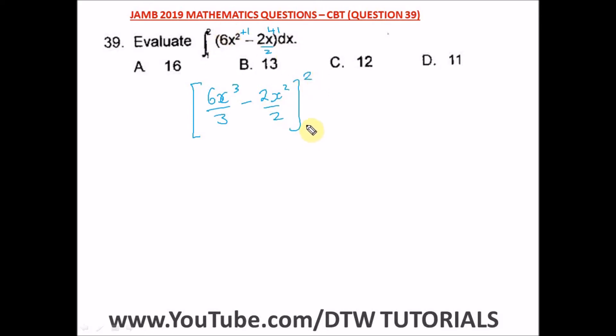This is the integral and we have a lower and upper limit. From here, this will cancel out—3 and 3, 2 and 2 cancel out—and we're left with 2x cubed minus x squared.